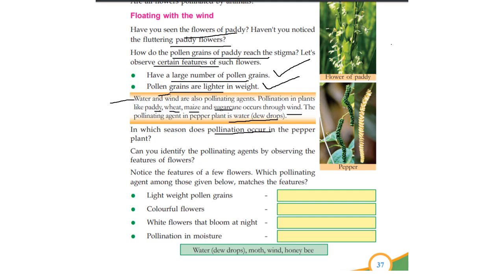Can you identify the pollinating agents from the features of flowers? Let's look at the features of the pollinating agent. Lightweight pollen grains — pollen grains are lightweight. Can you identify the pollinating agent? Wind.